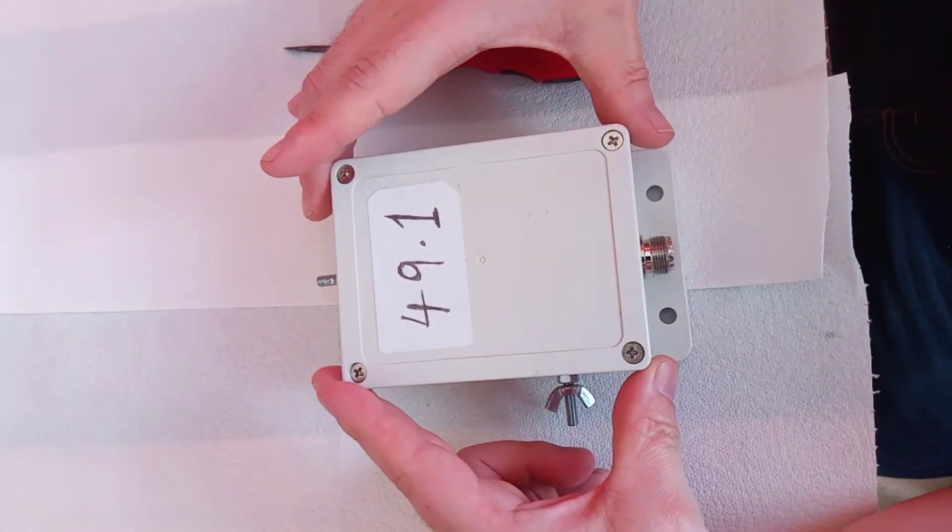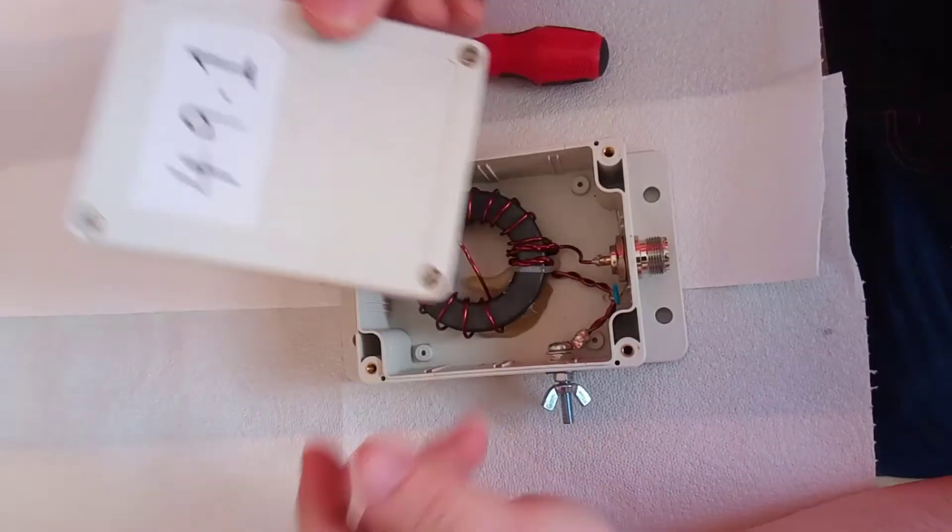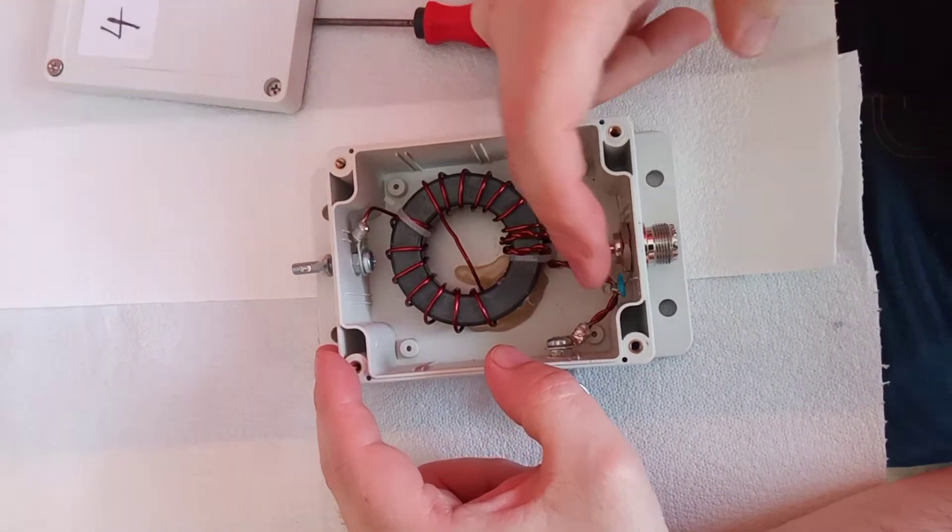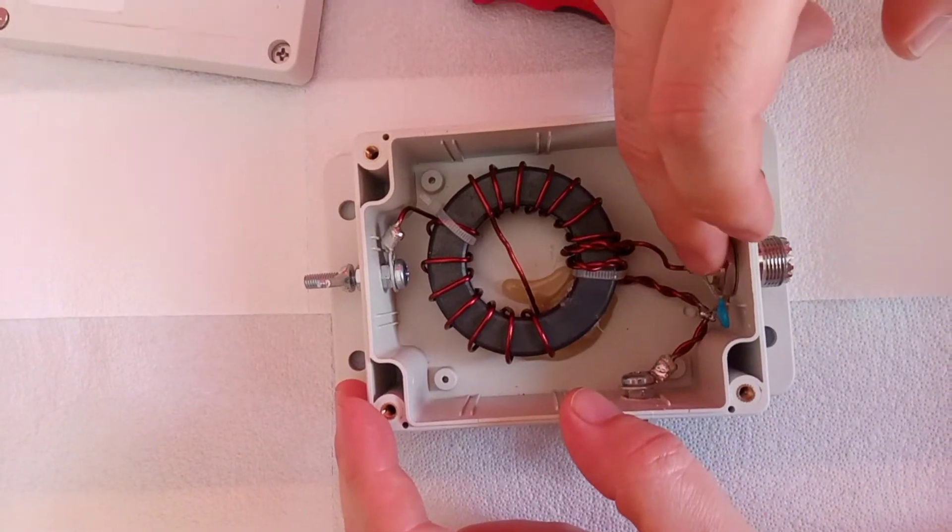We'll just take a little look inside. This is a 49 to 1 transformer and a 100pF capacitor. It helps on the higher band space, up around 10 meters.